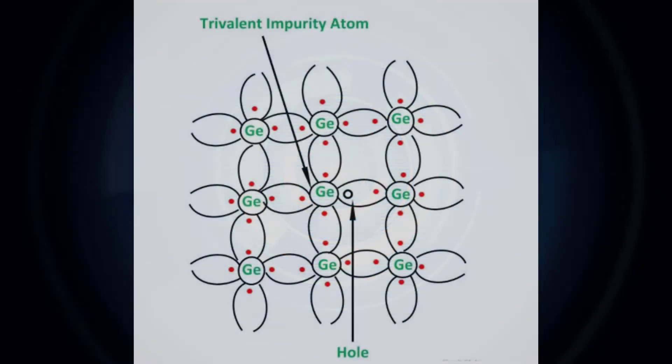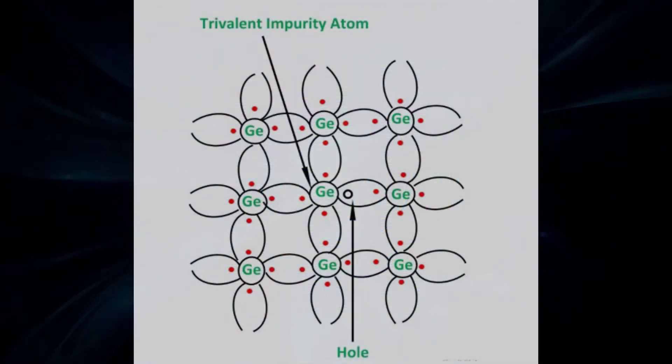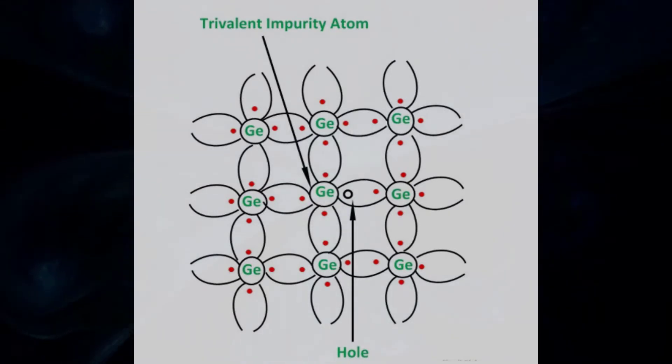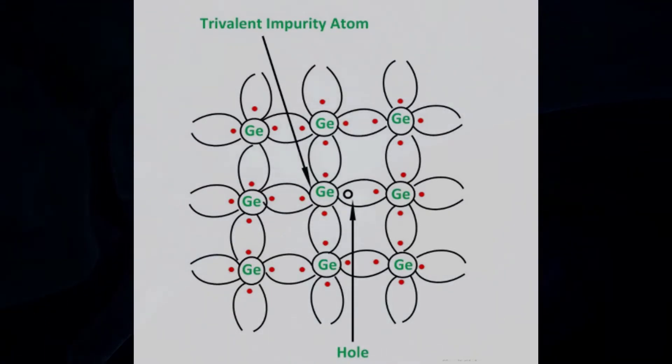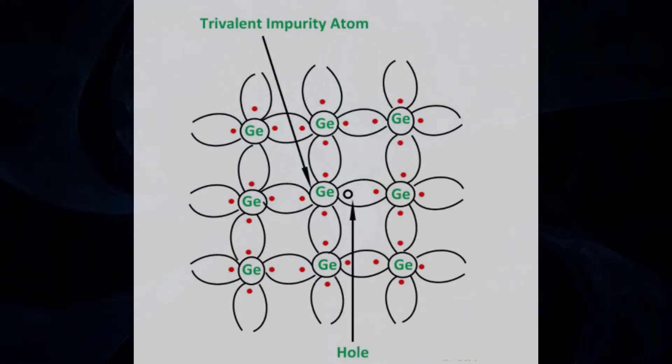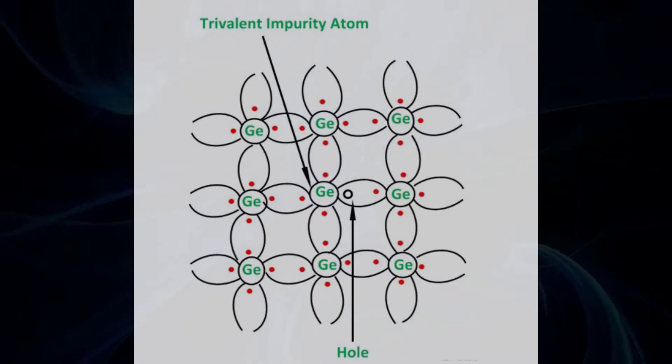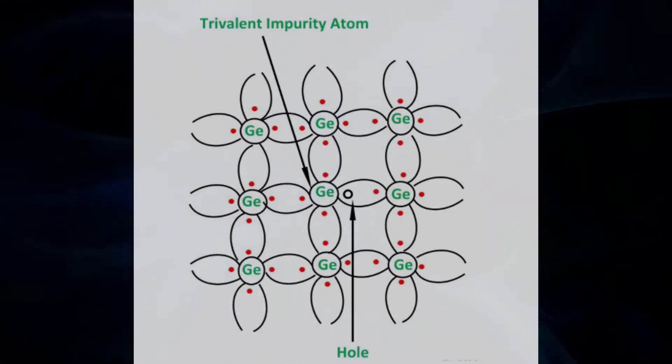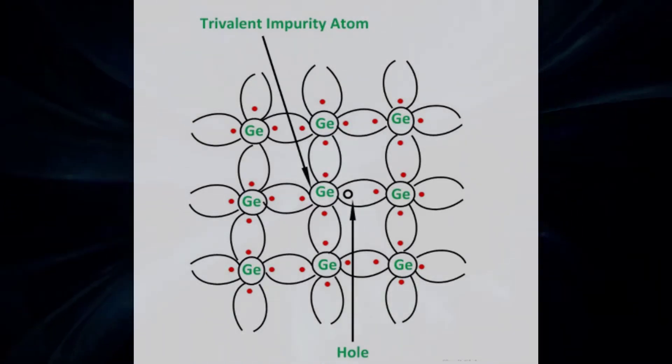A trivalent impurity like gallium having three valence electrons is added to germanium crystal in a small amount. Each atom of the impurity fits in the germanium crystal in such a way that its three valence electrons form covalent bonds with the three surrounding germanium atoms as shown here.